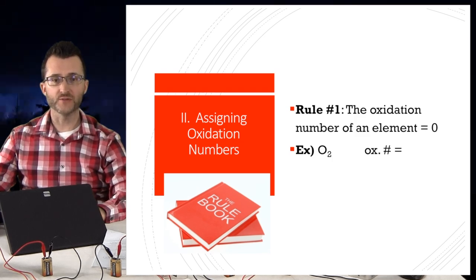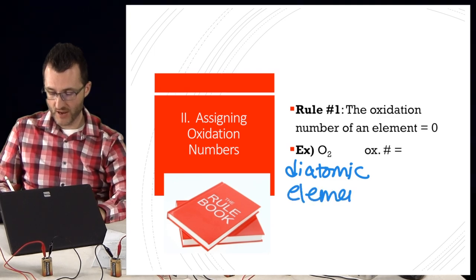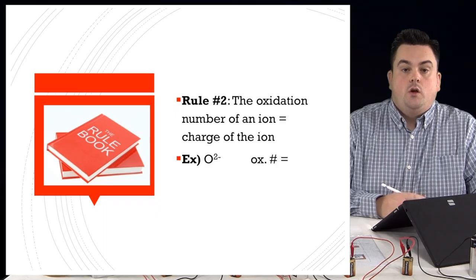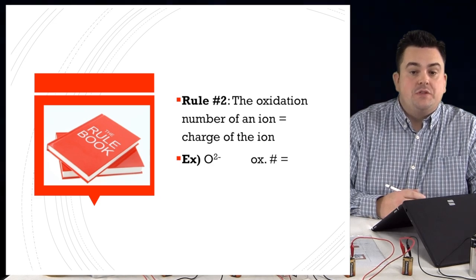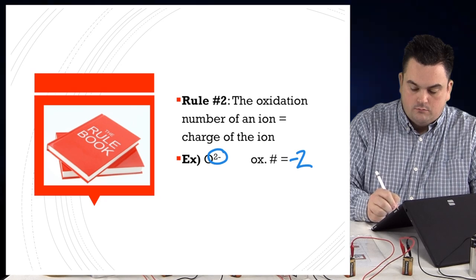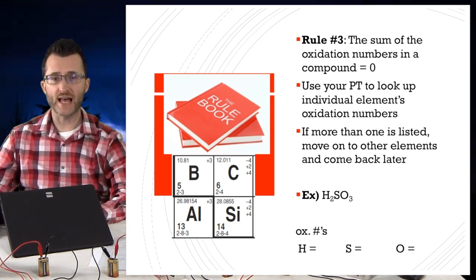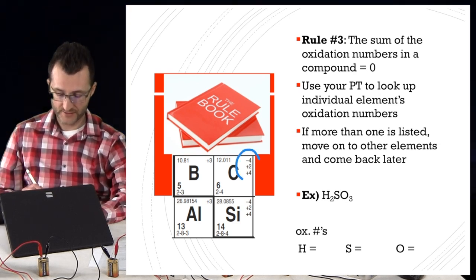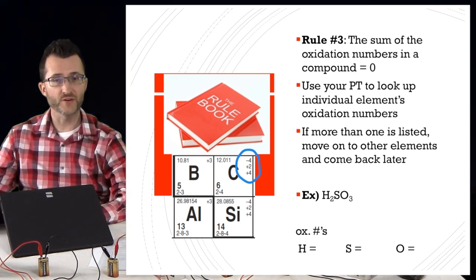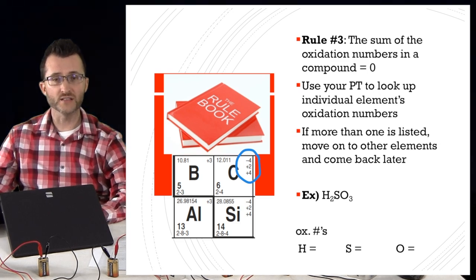Assigning oxidation numbers. Rule 1: the oxidation number of an element equals zero. For example, O2 is a diatomic element — even with the subscript 2, it's still an element, so its oxidation number is zero. Rule 2: the oxidation number of an ion equals the charge of that ion — for example, if oxygen has a 2-minus charge, its oxidation number is minus two. Rule 3: the sum of the oxidation numbers in a compound equals zero. Use your periodic table to look up individual elements' oxidation numbers. In this unit, we look up oxidation numbers for each individual element within a polyatomic ion rather than using Table E for polyatomic charges. If more than one oxidation number is listed for an element, skip it and come back later.